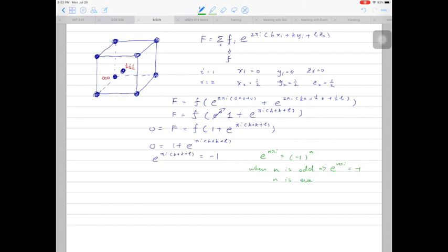When n is even, like 2, 4, 6, e to the power of n pi i will be equal to 1.